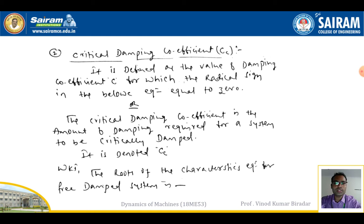This is also a very important term. Capital C indicates the damping coefficient and C with suffix c indicates the critical damping coefficient. It is defined as the value of the damping coefficient c for which the radical sign in the characteristic equation is equal to zero, or alternatively as the amount of damping required for a particular system to be critically damped.